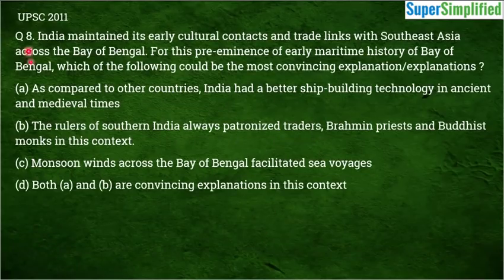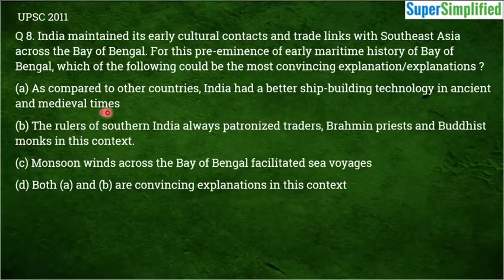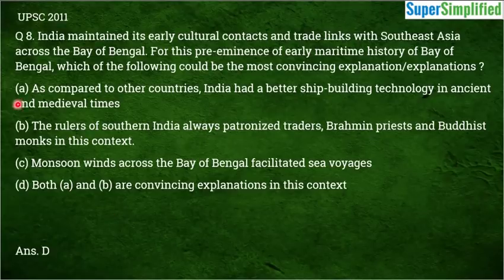Question number 8, from UPSC 2011: India maintained its early cultural contacts and trade links with Southeast Asia across the Bay of Bengal. Which of the following could be the most convincing explanation for the pre-eminence of early maritime history of the Bay of Bengal? A — India had better shipbuilding technology; B — rulers of Southern India patronized traders, Brahmin priests and Buddhist monks; C — monsoon winds across the Bay of Bengal facilitated sea voyages; D — both A and B. The correct answer is D — both A and B are convincing explanations.